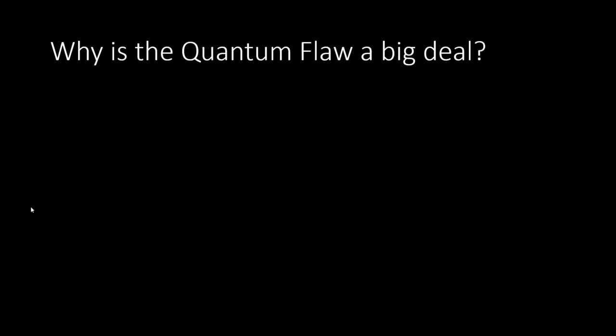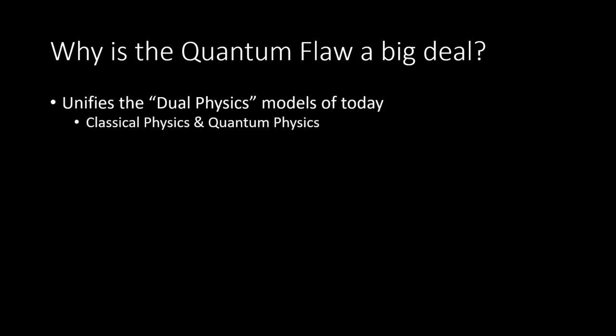So why is the quantum flaw a big deal? First, it unifies the dual physics models that we have today — classical physics, which describes large objects like people and planets, and quantum physics, which describes the physics of the microscopic world, like subatomic particles. When you understand the idea of the quantum flaw, you can get rid of classical and quantum and just have physics that describes the entire world.